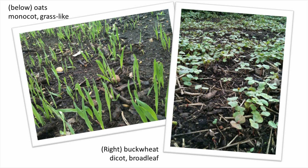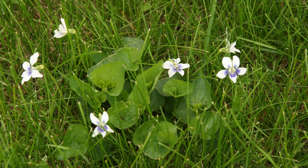Cotyledons refer to the embryonic leaf that emerges first from a germinating seed. In monocots, there's one leaf that emerges; with dicots, there's two. Other ways of telling monocots apart from dicots in your garden include flower parts and vascular arrangement. One of the most important practical reasons to know the difference between the two is in the selection of weed killers. Some herbicides select for one and not the other, allowing our broadleaf weed killers to be useful when controlling violets growing in our turf grass.